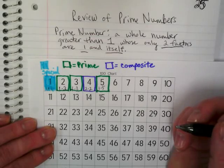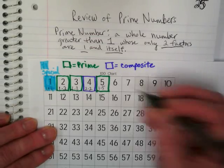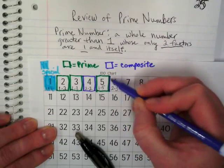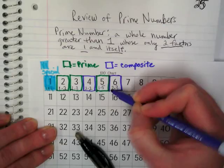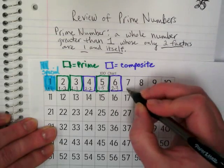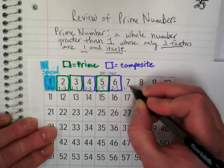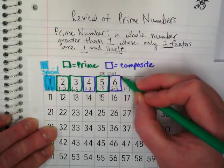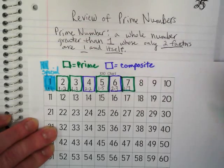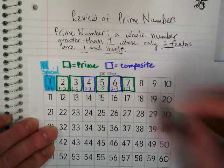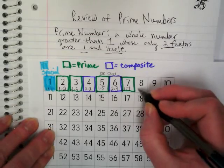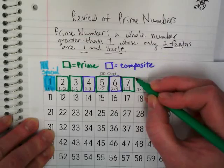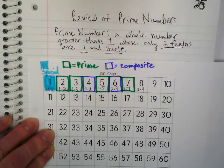Can I do something besides one times six to get six? Yes — two times three. That means it's composite. What about seven? The only whole numbers I can multiply to get seven are one times seven, so seven is prime. Eight: one times eight obviously, but I can also use two times four, so it's composite — and I almost used my prime number color, so be really careful when you're doing this.